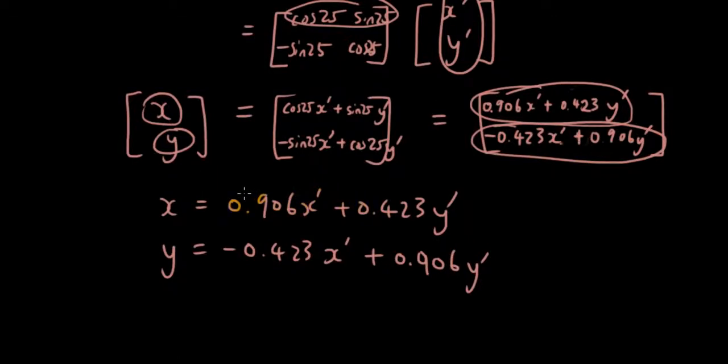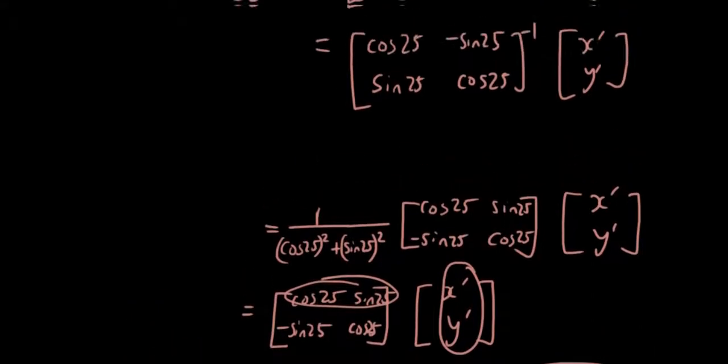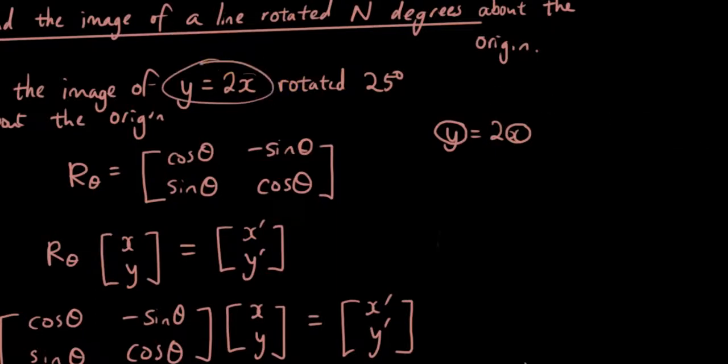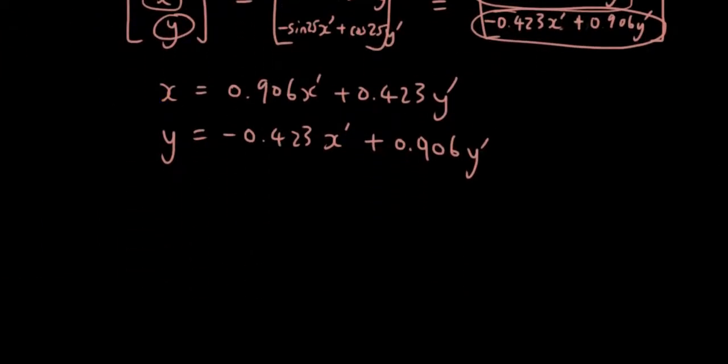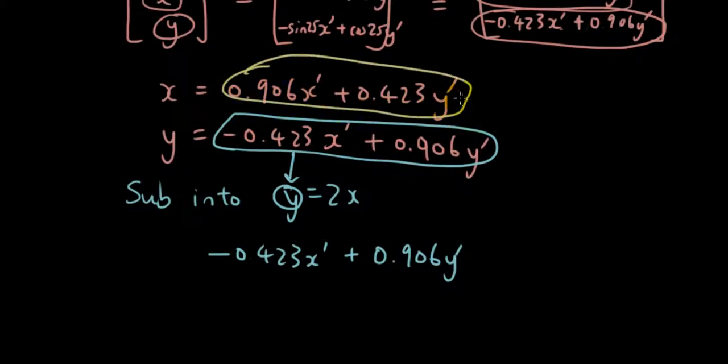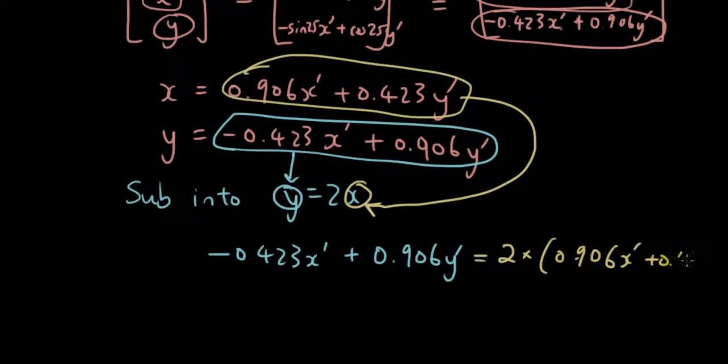Now, substituting our new expressions for x and y into our original equation where we had y is equal to 2x, so we're going to substitute it in. We will get negative 0.423x' plus 0.906y', so we're substituting all this stuff into where y is, and then we're going to substitute all this into where x is, so equals 2 times 0.906x' plus 0.423y'.